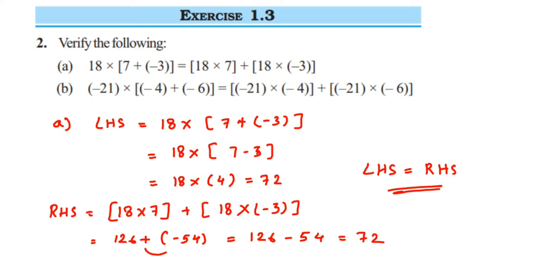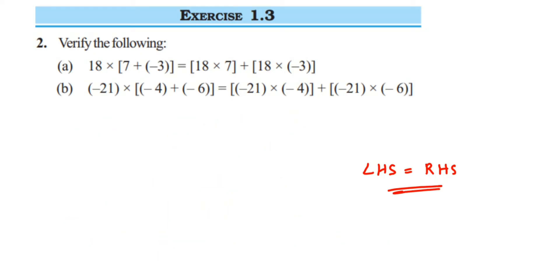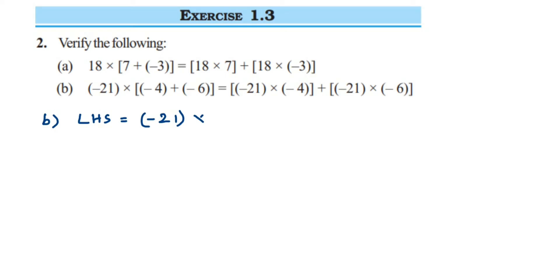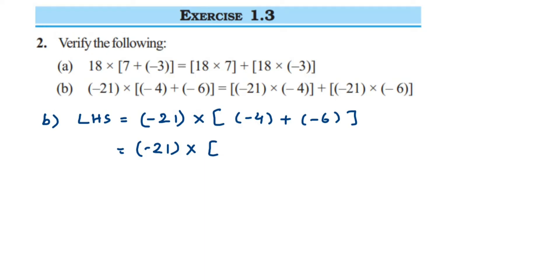Same thing we have to do for the second question — just check if LHS and RHS are equal or not. So in the second one, let's take the LHS first. LHS is equal to minus 21 multiplied by the bracket (minus 4 + minus 6). We're going to solve the bracket part first. Plus into minus will be minus, so we get minus 6.